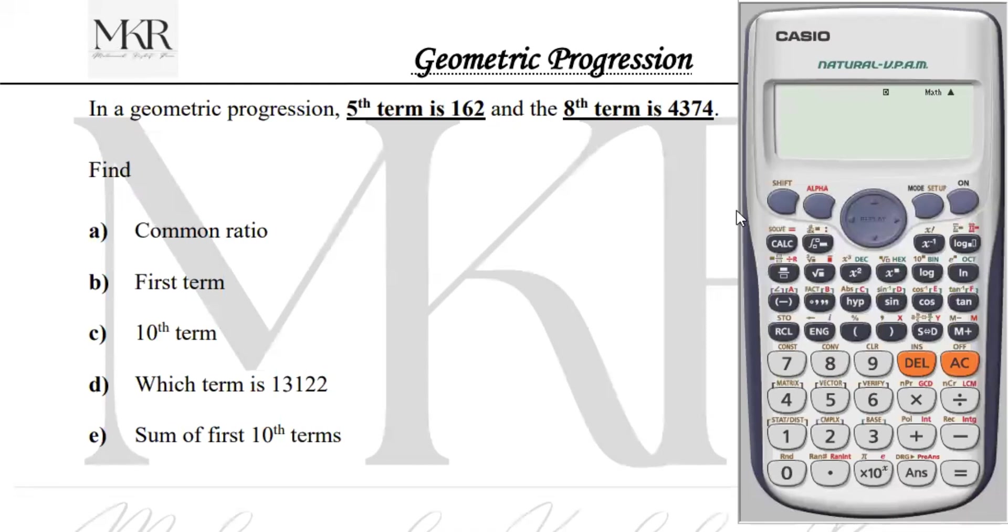In this problem, we have two terms. The fifth term is 162 and the eighth term is 4374. We need to find the common ratio, first term, tenth term, which term is 13122, and the sum of first ten terms. Let's start.